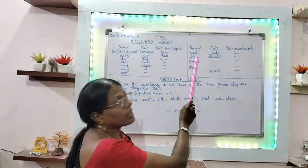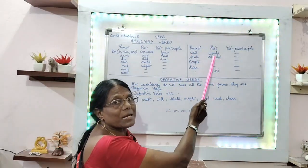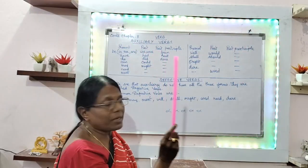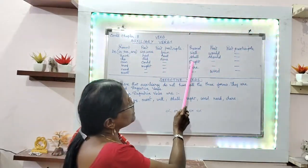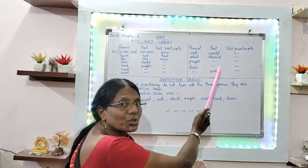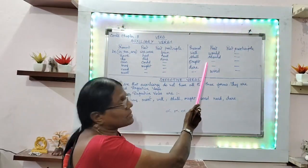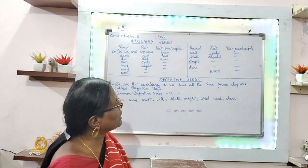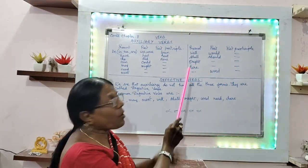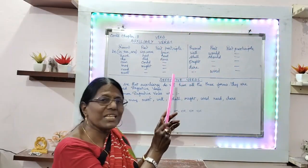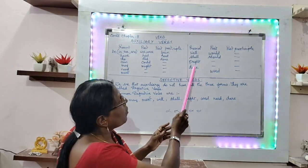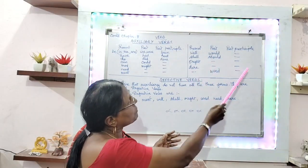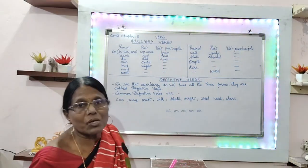'Will' — 'would' is the past, and there is no past participle. 'Shall' — 'should' is the past tense for 'shall', and past participle is not there. 'Ought' — the meaning of 'ought' is 'must' only, and past and past participle is not there.